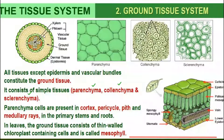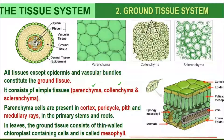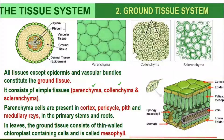Parenchyma cells are found in the cortex, endodermis, pith, and medullary rays. Medullary rays are present in between the vascular tissue system. The vascular tissues, as we have studied, are xylem and phloem.